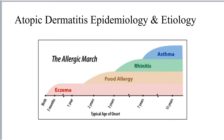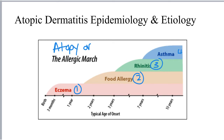Dermatitis is frequently associated with allergic rhinitis, asthma, and food allergy in a process known as atopy or the allergic march, as demonstrated in this figure. There is a very characteristic pattern of age of onset of these different conditions, where eczema or dermatitis starts first, typically anywhere between birth and six months of age. Next to come are food allergies, followed around age three by rhinitis and around age seven by asthma.